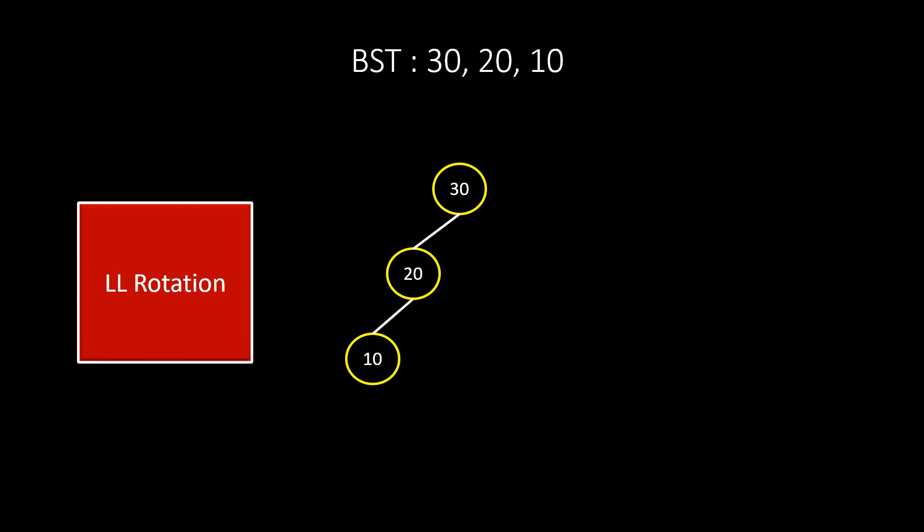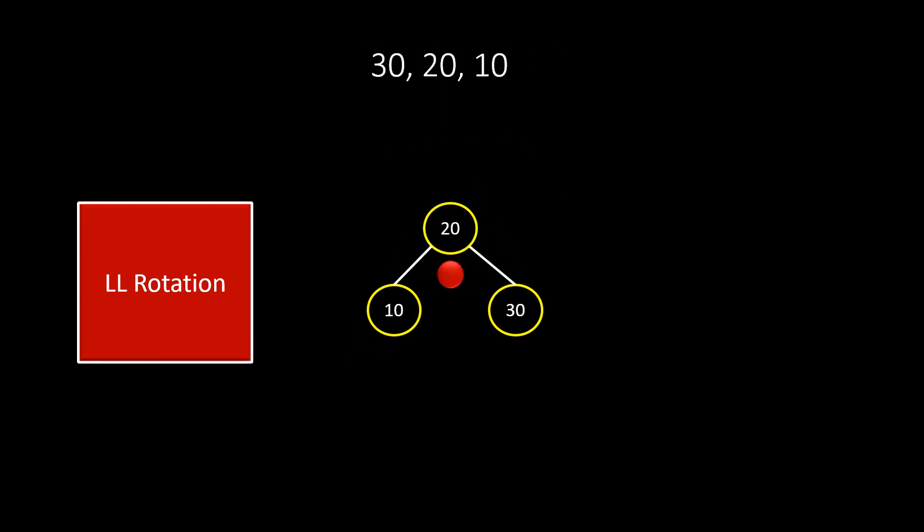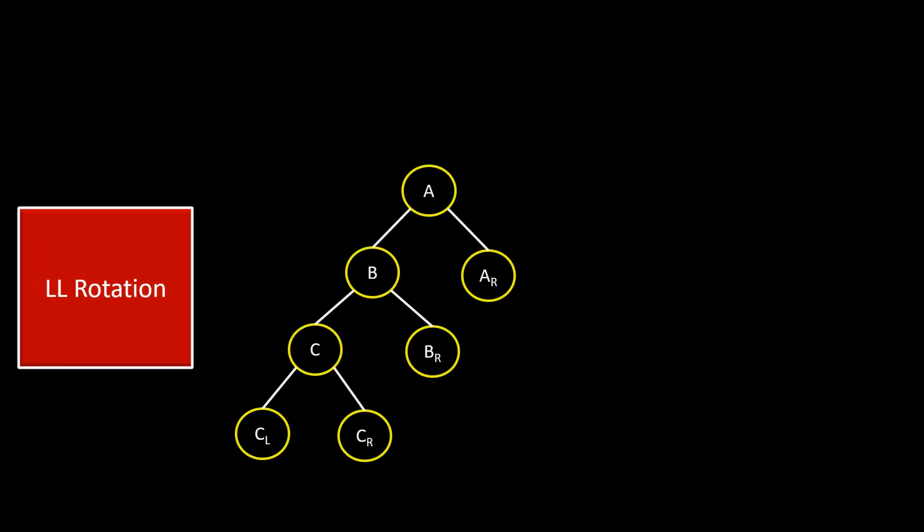Let's take this one and try to see how to perform the rotation. Imagine you fix a nail here and try to pull the string in this direction. So, 30 goes down in the right and this becomes our rotated binary tree. This was just 3 nodes.